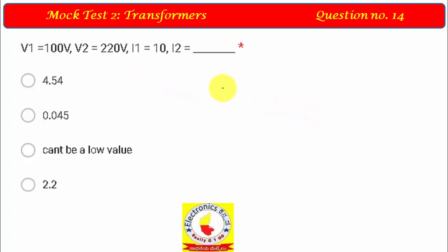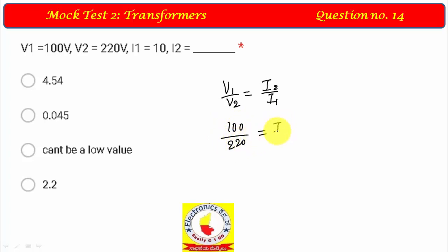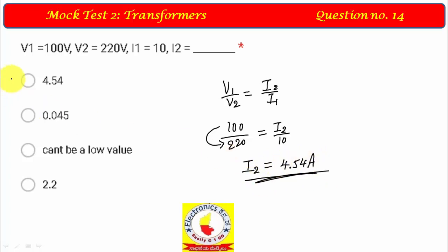Question 11: The formula V1/V2 = I1/I2 — this is wrong. The correct relation is V1/V2 = I2/I1. This is a common mistake to watch out for. With I1 = 10 A given, and it being a step-up transformer, the output current works out to approximately 4.54 amperes, so option A follows.